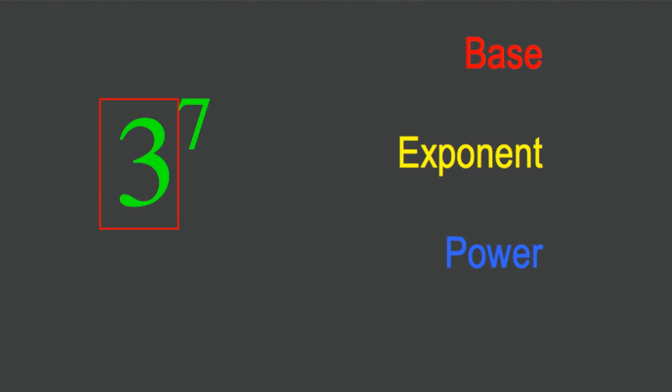Whereas when we're referring to the exponent, we're talking about this number here - that's the seven. But then if we're interested in talking about the power, it is the two together that make up the power: the three with the seven.